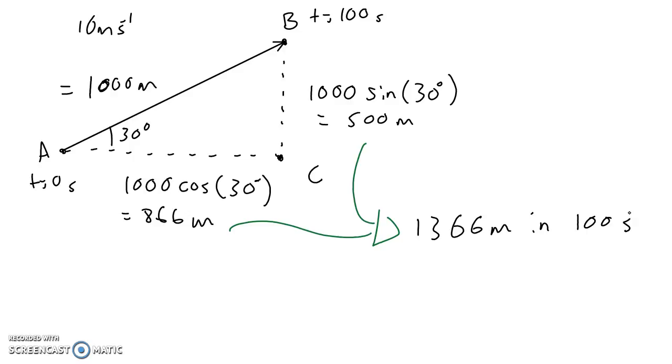That means that their overall velocity, the distance traveled divided by the time taken, is going to have to be 13.66 meters per second. In other words, the scientists have to be traveling faster than the balloon in order to go this extra distance to point C to get to point B, simply because they have to follow the roads and the balloon doesn't.